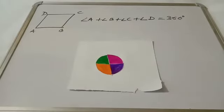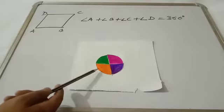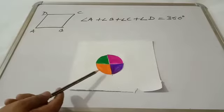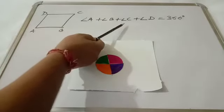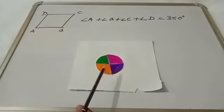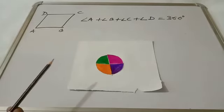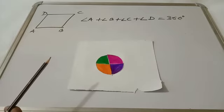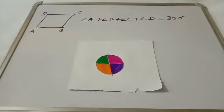Students, since the sum of all angles around a point is 360 degrees, therefore angle A plus angle B plus angle C plus angle D equals 360 degrees. Hence, it is verified that all four interior angles of a quadrilateral have the sum 360 degrees.